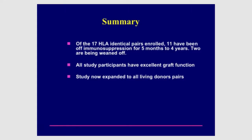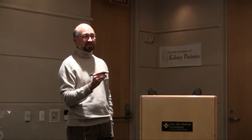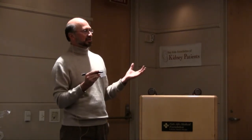So far, we have 17 patients enrolled, and number 18 will be at surgery next Monday. Eleven of them have been taken off immunosuppression — some for about five months, and the longest has been without any immunosuppression for more than four years. Two more are currently being weaned to smaller doses. Four patients were not able to be taken off medication; however, they have excellent graft function on minimal immunosuppression. Having completed this phase with the easiest candidates, we are now moving to expand the protocol to all living donors, even those who are not as well matched.